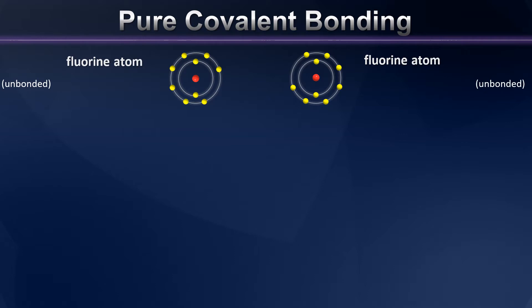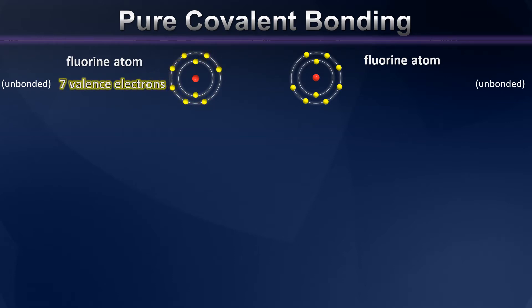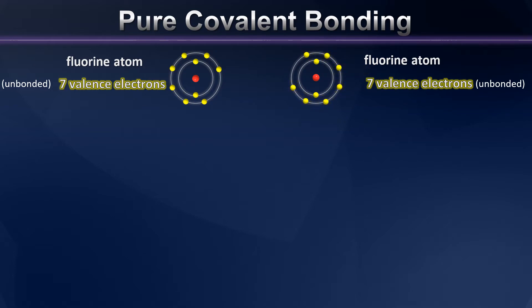You'll notice that these unbonded fluorine atoms have 7 valence electrons each. What this means is that these two fluorine atoms would each like to gain an electron to get up to 8 valence electrons and therefore satisfy the octet rule.